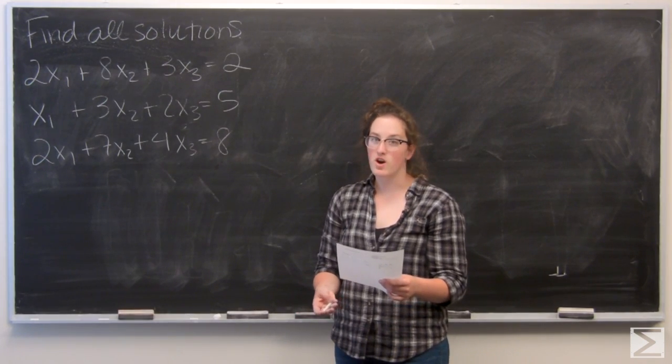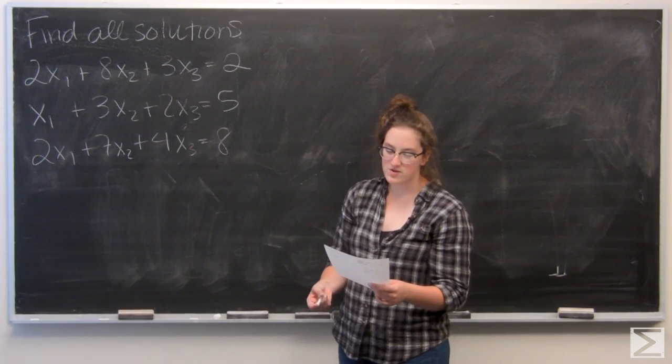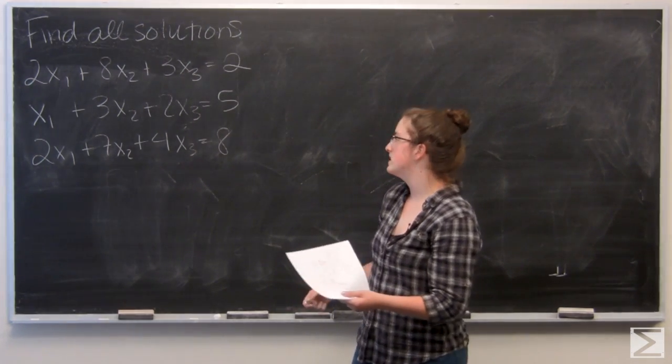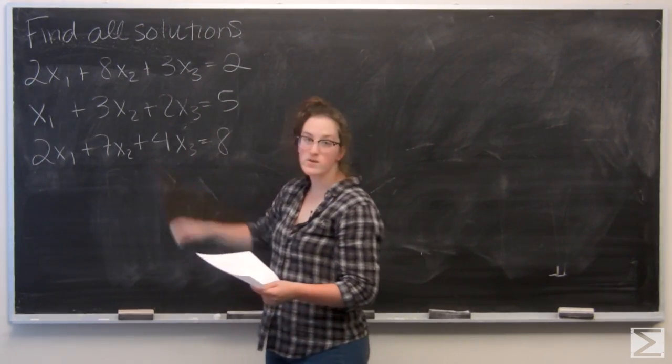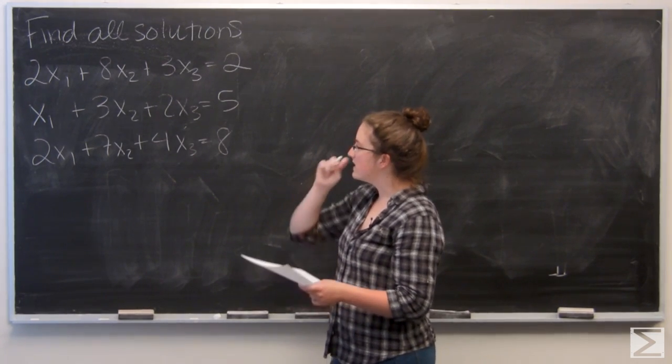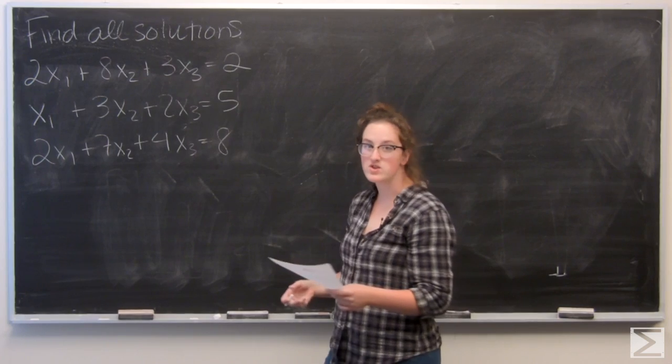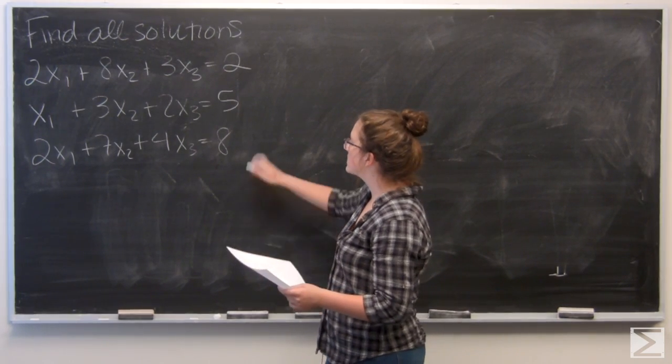For this question, I am asked to put the augmented coefficient matrix into row echelon form and then use back substitution to find all solutions. So I've got a system, three equations of three variables, and to make the augmented coefficient matrix I want to pull the coefficients off of x1 through x3, put them in a matrix, and set that equal to...